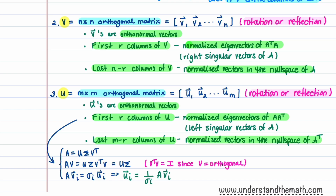The last matrix to find is matrix U, a square m by m orthogonal matrix representing a rotation or reflection transformation. The first r columns of U are the normalized eigenvectors of A A transpose, and the last m minus r columns are normalized vectors in the null space of A transpose. In practice, it's easier to find U's vectors from V using the formula AV = U·Sigma, giving us A·Vi = sigma_i·U_i.